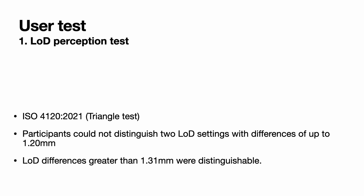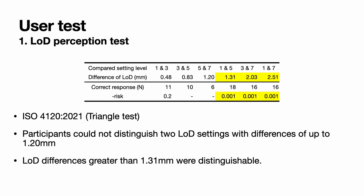To understand how different LOD settings affect pointing performance, we conducted two experiments with 24 FPS players. In the first experiment, a psychophysical test was conducted to determine the ability of humans to discriminate between different LOD levels. Participants could not distinguish two LOD settings with differences of up to 1.20 mm, but LOD differences greater than 1.31 mm were distinguishable.